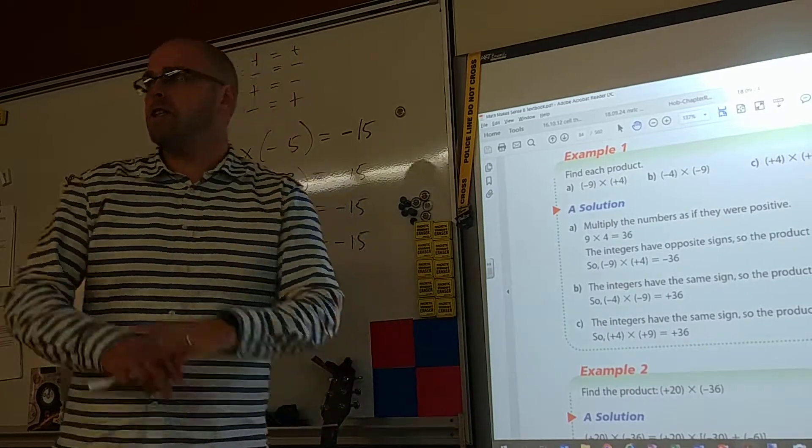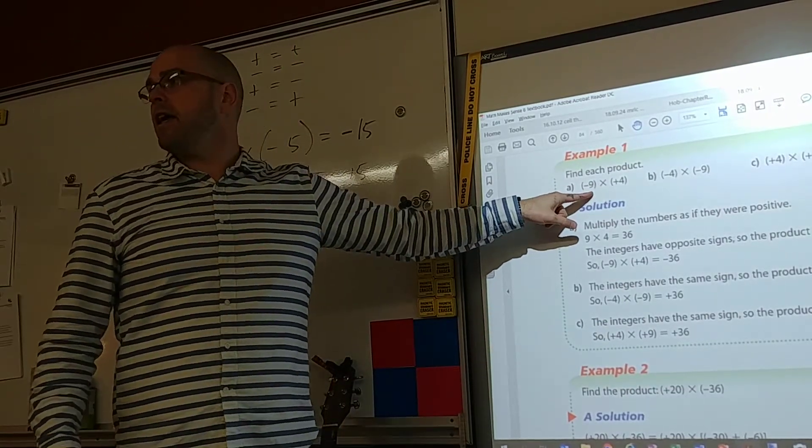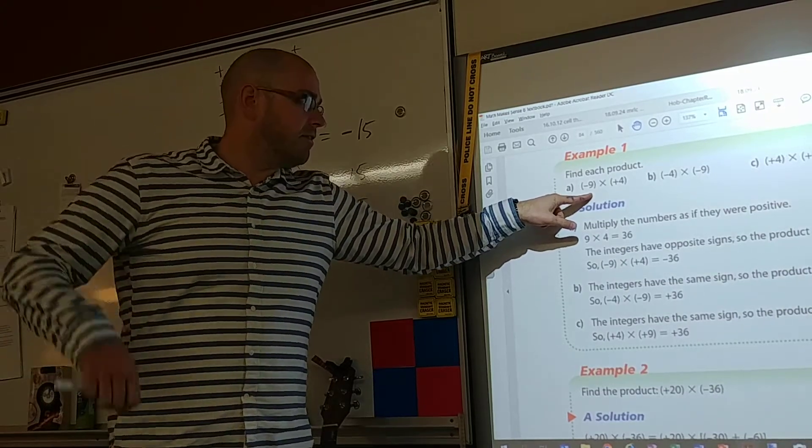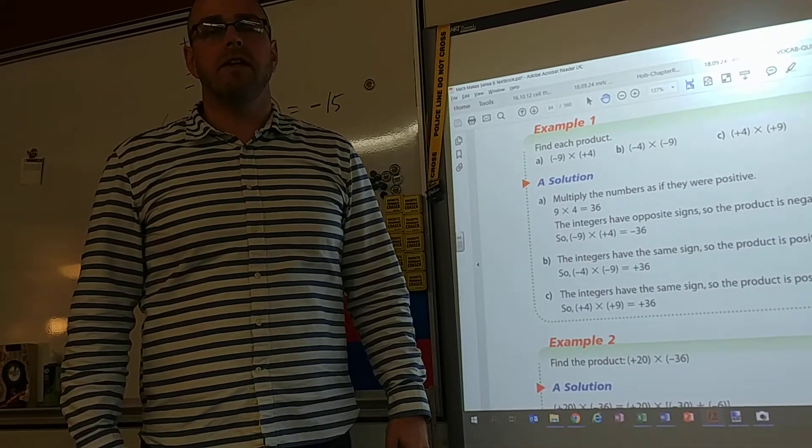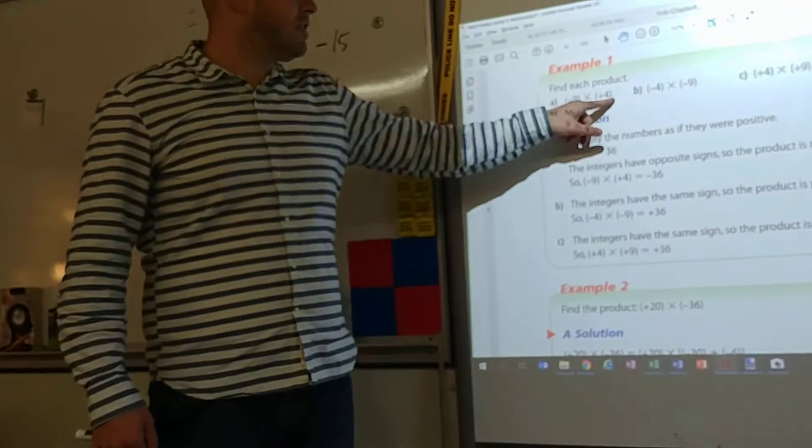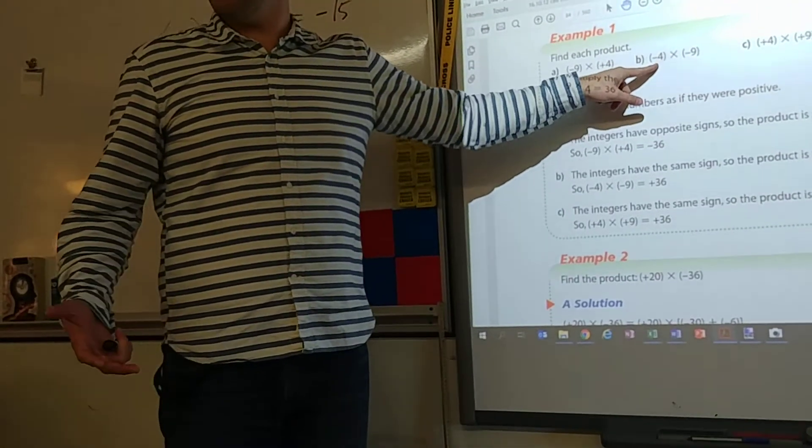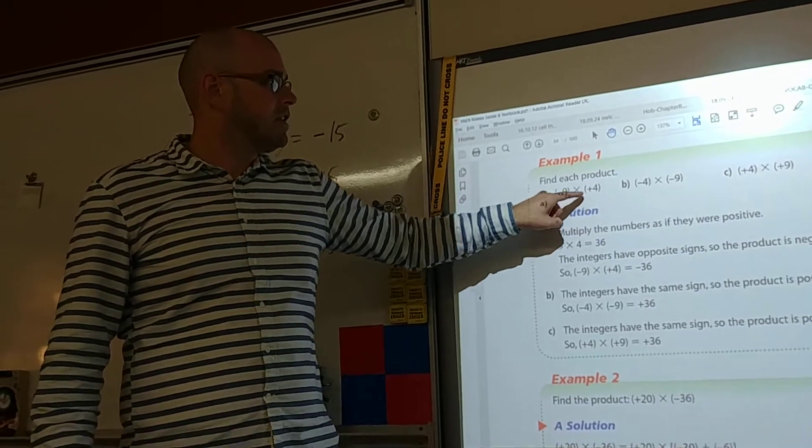What's nine times four? Just nine times four. Call it up. 36. Is it going to be positive or negative? Negative. Four times nine? 37. Positive. 37? 36. 36. Positive. Wait. We switched the nine and the four and the four and the nine. Did it matter?